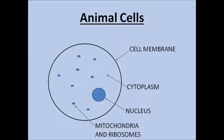The ribosomes are where proteins are made. The mitochondria is where respiration happens. Respiration is how we release energy from the sugars that we eat.